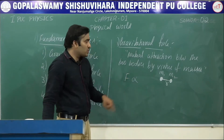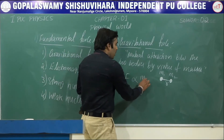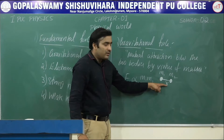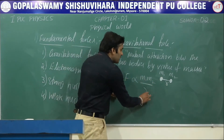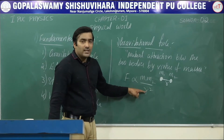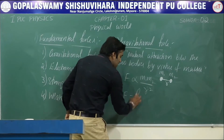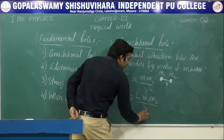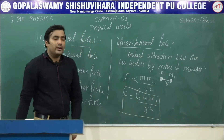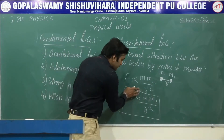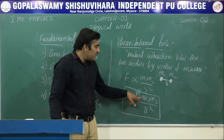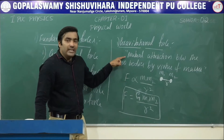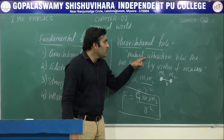The magnitude of the gravitational force F is proportional to the product of masses M1 and M2, and inversely proportional to the square of the distance R. Removing the proportional sign, F = G·M1·M2 / R², where G is the gravitational constant.